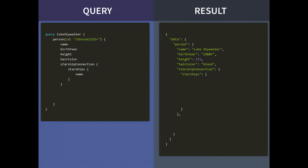You can also query for related data. For example, you're already looking for the starship connection, with a sub-object for the starships themselves and their names. In the response, since we say 'plural' here, it's going to return an array — either zero or many items, depending on how many you're getting. In this case, Luke has two spaceships. You can also make a different relationship — asking for the homeworld — and you get Tatooine. It's tailor-made according to the screen or the client you're using.